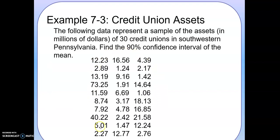Here's another one. What if your data they gave you is in raw data, just actual data. The following data represents a sample of assets in millions of dollars of 30 credit unions in southwestern Pennsylvania. Find a 90% confidence interval for the mean. This is just 30 credit unions out of all the credit unions, so it's a sample, but we try to estimate what if we had all the credit unions, what would that mean be.